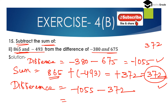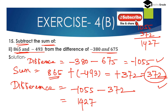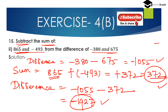Computing 1055 and 372: 1055 plus 372 equals 1427. Both are of negative sign, so we have to place the negative sign before the integer 1427. So the answer is minus 1427. When we subtract the sum of 865 and minus 493 from the difference of minus 380 and 675, we get minus 1427.